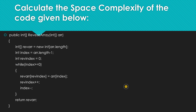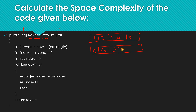Now let's discuss space complexity. Suppose we have this code — as the function suggests, it reverses a particular array. Suppose we give it an input array; it will return the array completely reversed. So what this code does is it allocates an array which we are calling 'reverse array', then it allocates some variables, and then goes through a for loop.